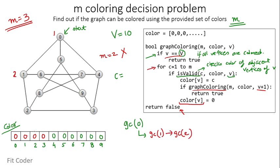We call GC(2). The adjacent vertex has color 2, so we assign color 1 to vertex 2. From GC(3), color 1 is already assigned to the adjacent vertex 2, so we assign color 2 to vertex 3. We invoke GC(4). At vertex 4, colors 1 and 2 are already assigned to adjacent vertices, so we assign color 3 to vertex 4.